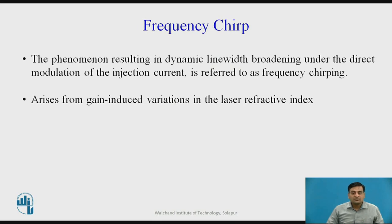The next characteristic is frequency chirp. The direct modulation of a single longitudinal mode semiconductor laser can cause a dynamic shift of the peak wavelength emitted from the device. This phenomenon, which results in dynamic line width broadening under direct modulation of the injection current, is referred to as frequency chirping. It arises from gain-induced variations in the laser refractive index due to the strong coupling between the free carrier density and the index of refraction in semiconductor structures.